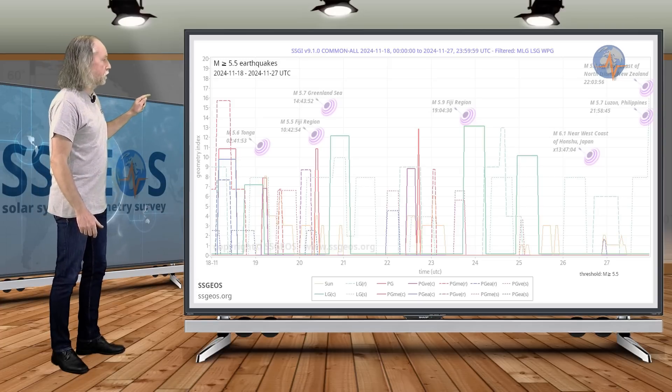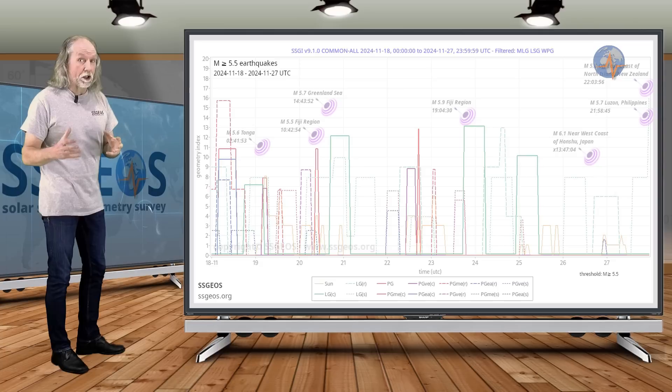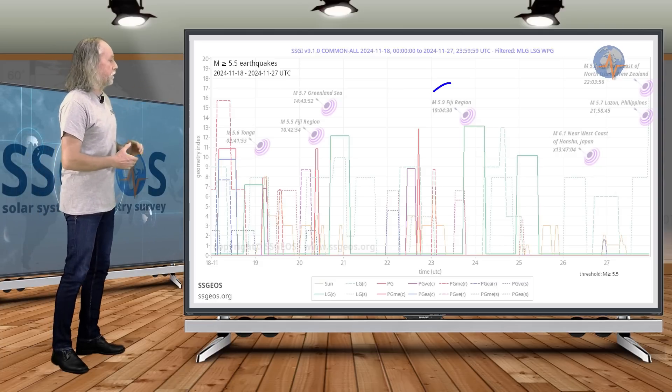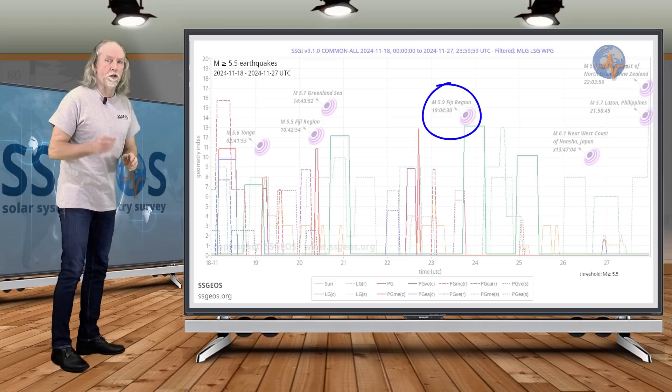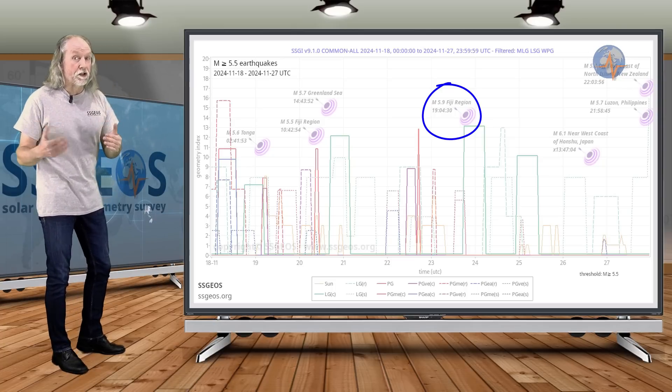Then we had this convergence on the 22nd which is really a critical convergence and we see a seismic response later on the 23rd with a 5.9 in the Fiji region. Again it didn't reach magnitude 6.